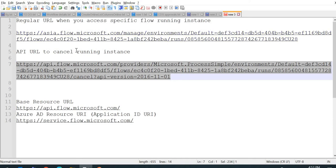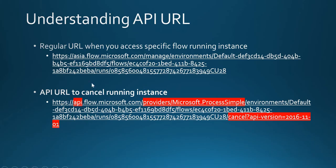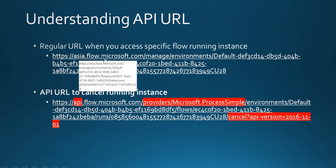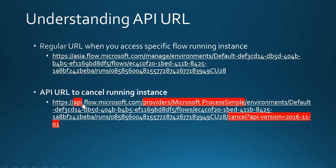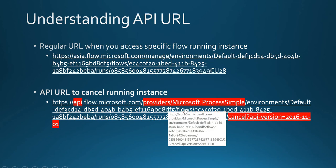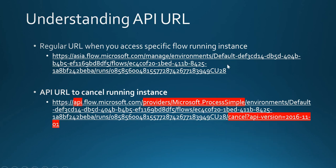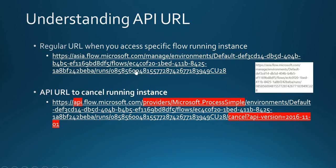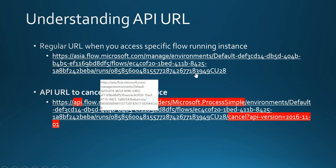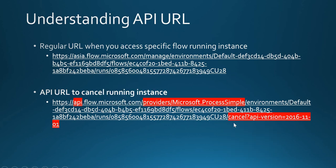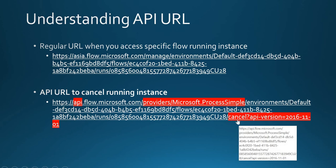Let's understand the difference between the two URLs. The running flow instance URL uses your region at flow.microsoft.com, whereas the API URL uses api.flow.microsoft.com. Then you have 'manage/environments' versus 'providers/Microsoft.ProcessSimple'. The rest of the path is the same: environment ID, flows, flow ID, run, run ID. At the end you just need to add 'cancel' as the endpoint and the API version parameter.